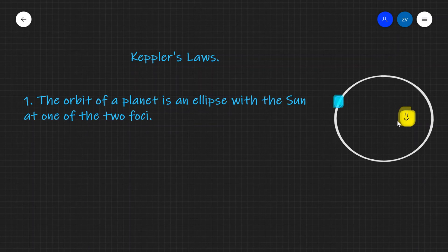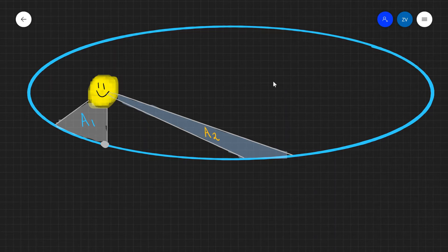Now let's have a look at Kepler's second law. Okay, now Kepler's second law is quite specific, so I'd like to go into a little bit more detail. Imagine that you have a planet orbiting the sun.